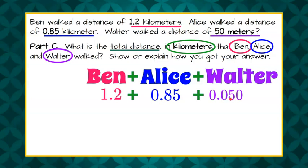So now we need to add them all together. So go ahead over here. Ben 1.2, Alice 0.85, and Walter 0.05. And we're going to fill in our zeros. Now these weren't significant in this column. You didn't need to have those. If you didn't, that's fine.